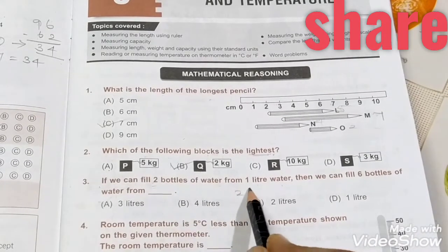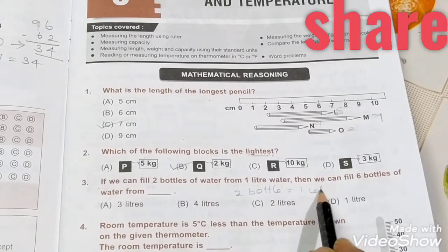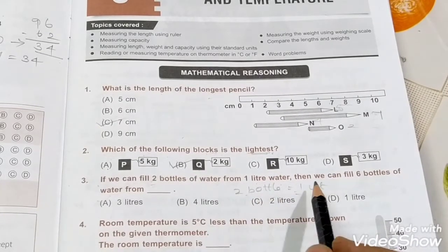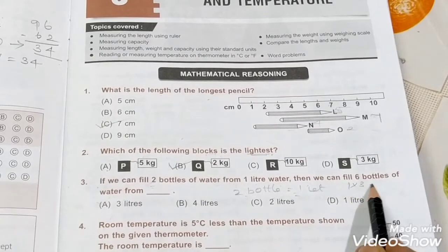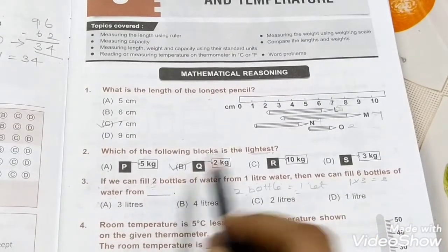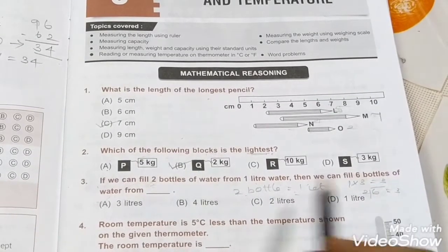So six bottles means multiply by three. One multiplied by three equals three liters. Six divided by two means three. So three liters is the correct answer.